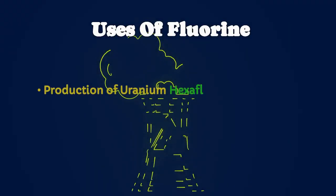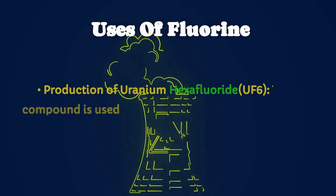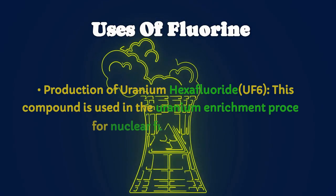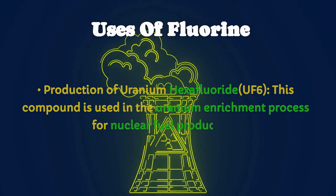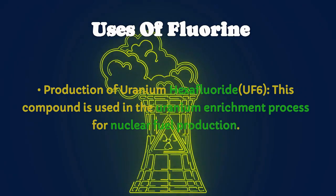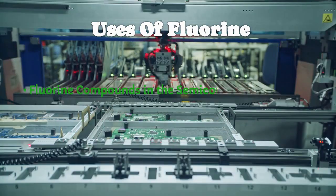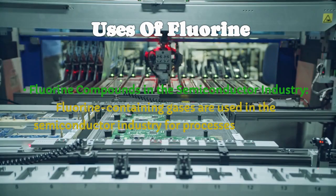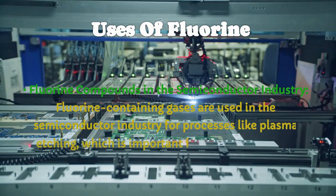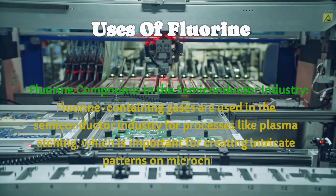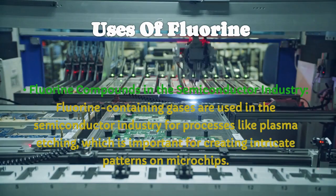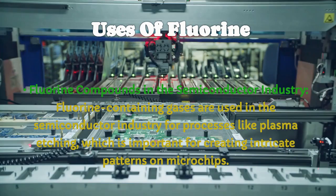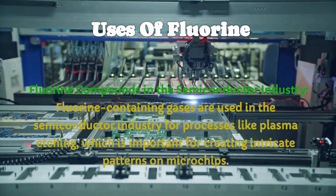Production of Uranium Hexafluoride (UF6): this compound is used in the uranium enrichment process for nuclear fuel production. Fluorine-containing gases are also used in the semiconductor industry for processes like plasma etching, which is important for creating intricate patterns on microchips.